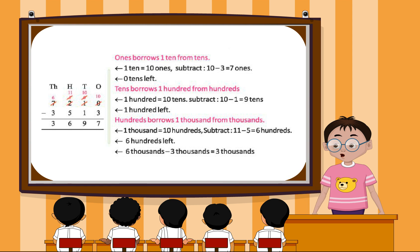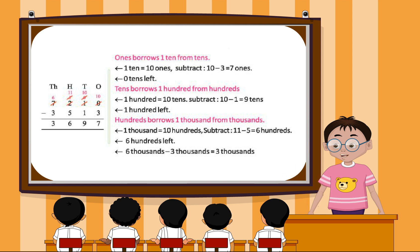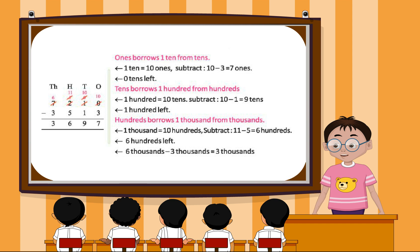Hundreds borrow one thousand from thousands. One thousand equals ten hundreds. Subtract. Eleven minus five equals six hundreds. Six hundreds left. Six thousands minus three thousands equals three thousands.